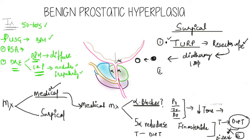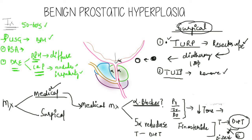Another procedure is transurethral incision of the prostate gland (TUIP). Instead of using a diathermy loop, an incision is made within the prostate from inside the urethra to remove the prostate tissue. These are the main surgical approaches available for the treatment of benign prostatic hyperplasia.